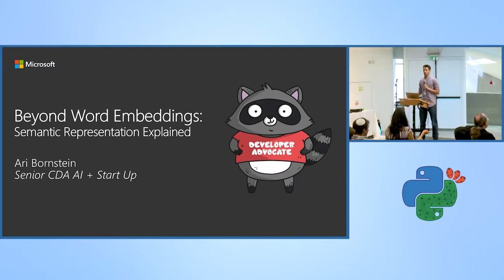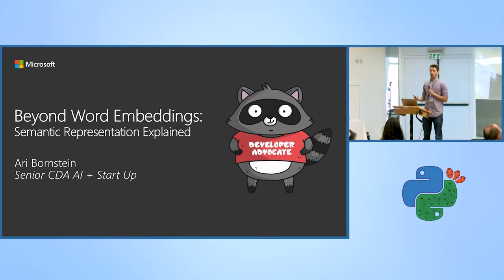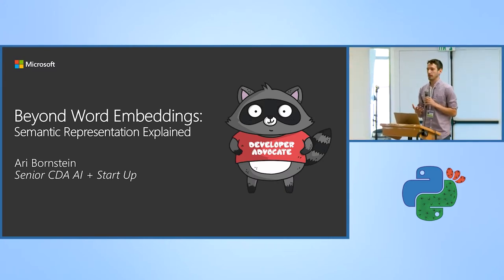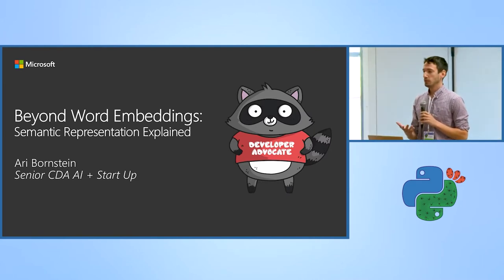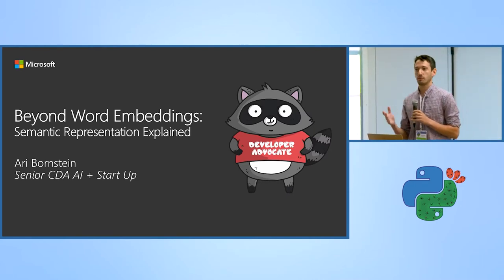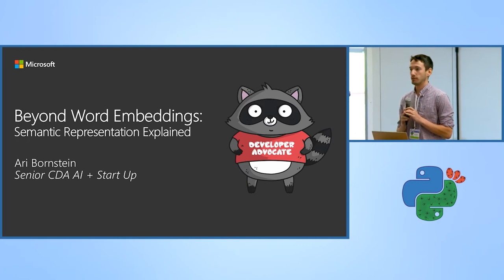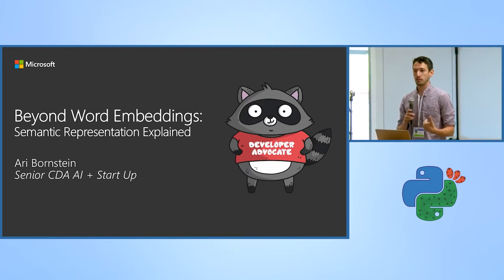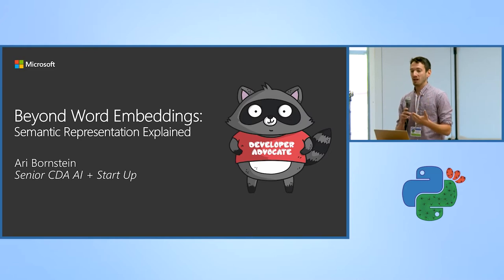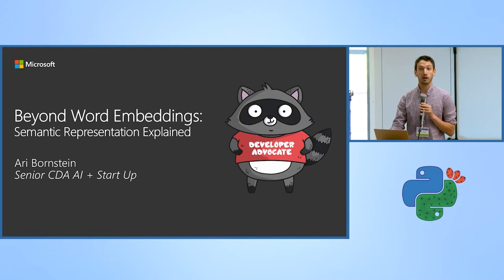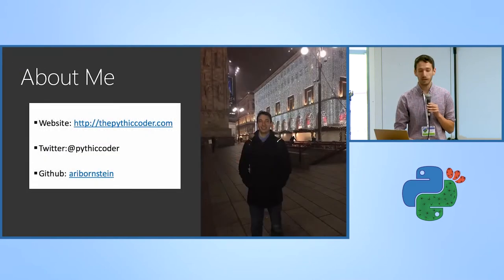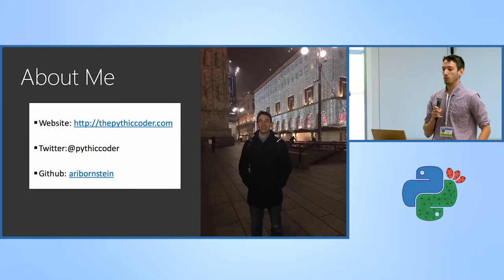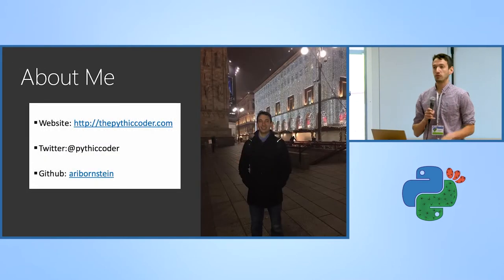Today I'm going to be talking about beyond word embeddings and some of the trends in natural language processing that we've seen — kind of the pitfalls, the constraints of current state-of-the-art methods, and what some of the research is and the direction the field seems to be going. My name is Ari Bornstein. I'm an open source engineer at Microsoft.